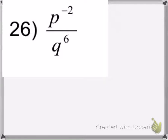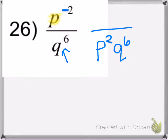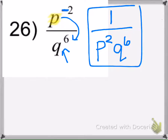Here we have p to the negative 2nd times q. We can't subtract the exponents because the bases aren't the same — we have a p and a q. So since this p has a negative exponent, we move it to the denominator. And since this q doesn't have a negative, it's just going to stay in the numerator. I'll put it in alphabetical order. Since p moved down, there's nothing in the numerator, so I put a 1 there. Whenever there's nothing in the numerator, you've got to put a 1.